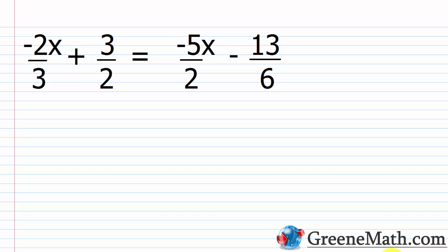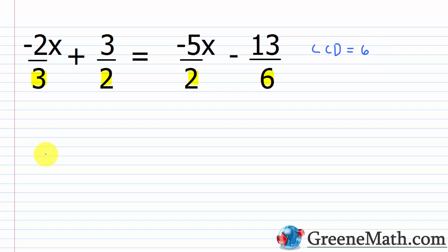Let's start with an example involving fractions: negative two-thirds x plus three-halves equals negative five-halves x minus 13/6. The basic idea is to multiply both sides of the equation by the LCD — the least common denominator — of all the denominators involved. This is legal because we can always multiply both sides by the same non-zero number. Looking at the denominators 3, 2, 2, and 6, the LCD is 6.